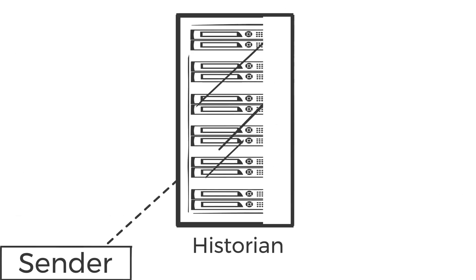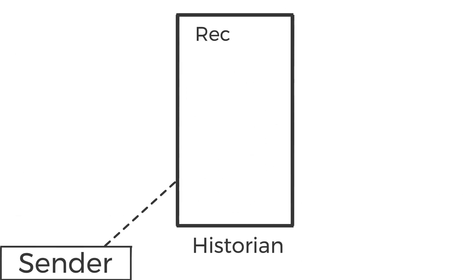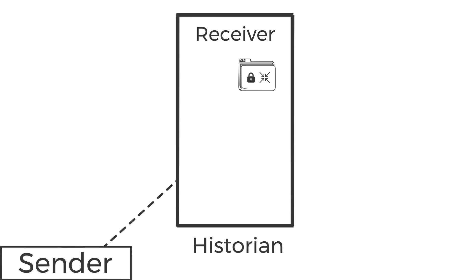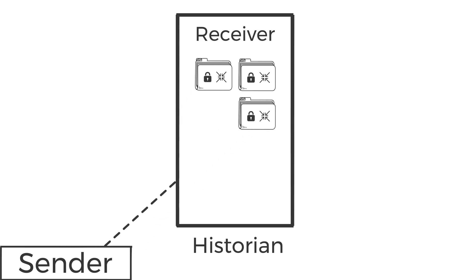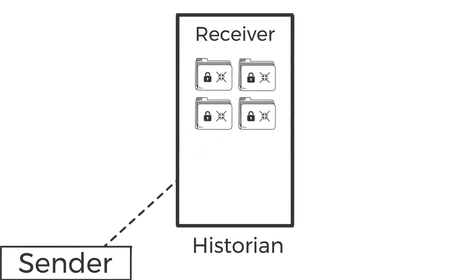To move data, Sender communicates with Canary's Receiver. Receiver has a simple job: accept data from multiple senders and move that data into the Canary database, named Historian.